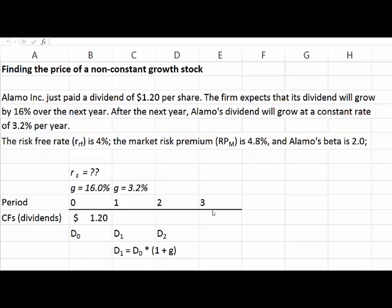We have a company that just paid a dividend of $1.20 per share, that would be our D0. The firm will continue to grow by 16% over the next year, so the dividends just paid will grow by 16%, meaning D1 will be 16% more.